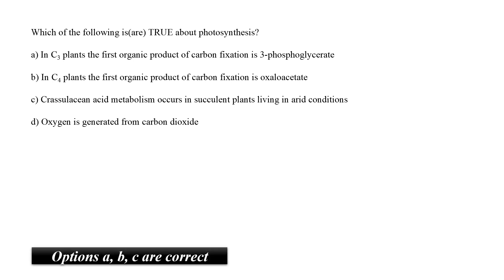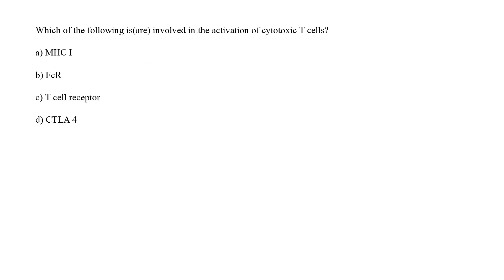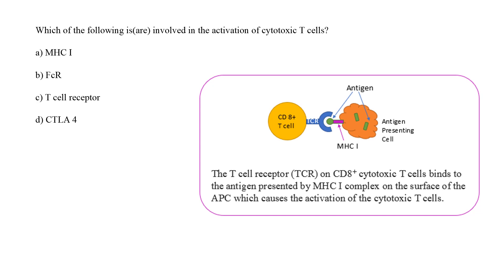Options A, B and C therefore stand correct for this question. The next question is, which of the following are involved in the activation of cytotoxic T cells? There are T cell receptors present on the cytotoxic T cells that bind to the antigen presented by MHC1 complex on the surface of APC or the antigen presenting cell, which causes the activation of cytotoxic T cells. Therefore, it is MHC1 option A and T cell receptor option C. That are involved in the activation of cytotoxic T cells. Options A and C are correct.